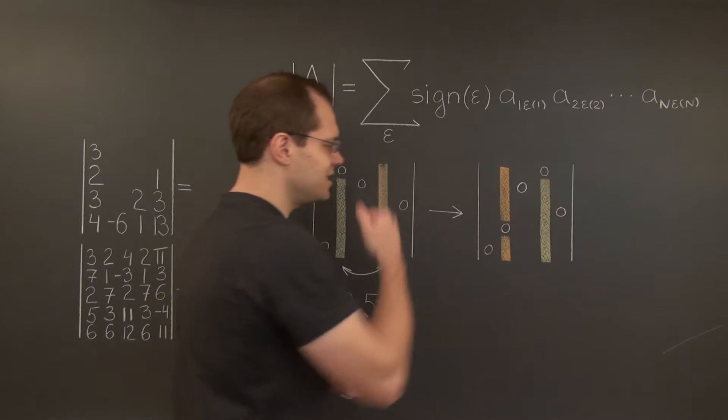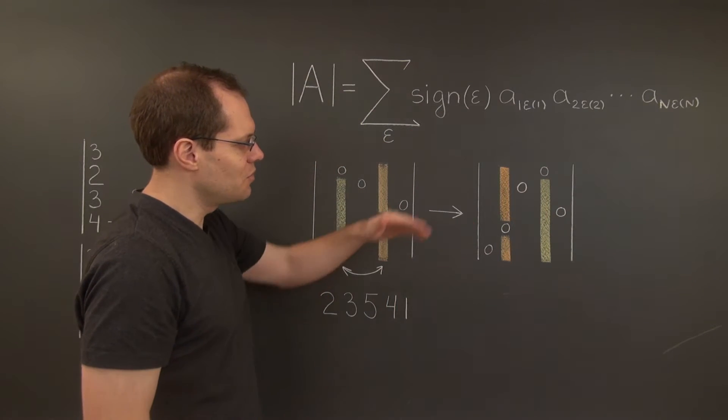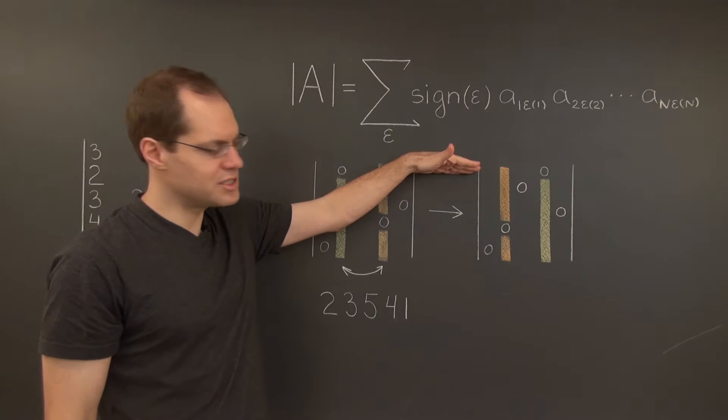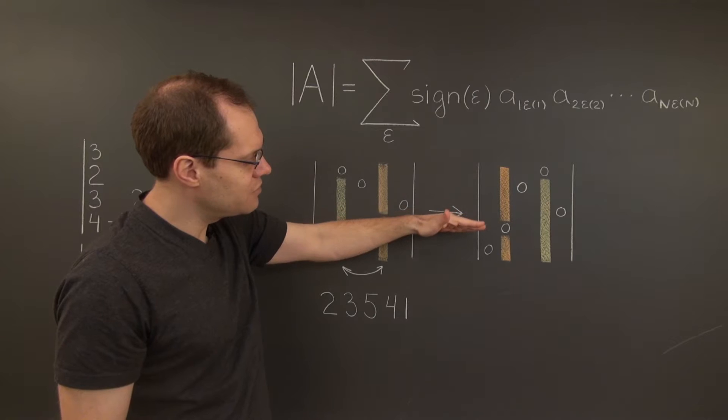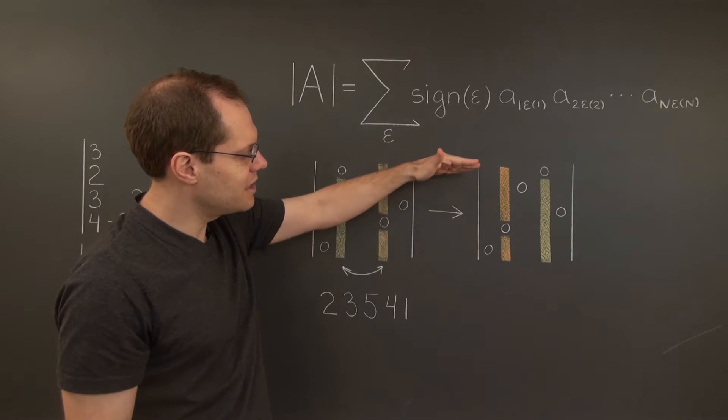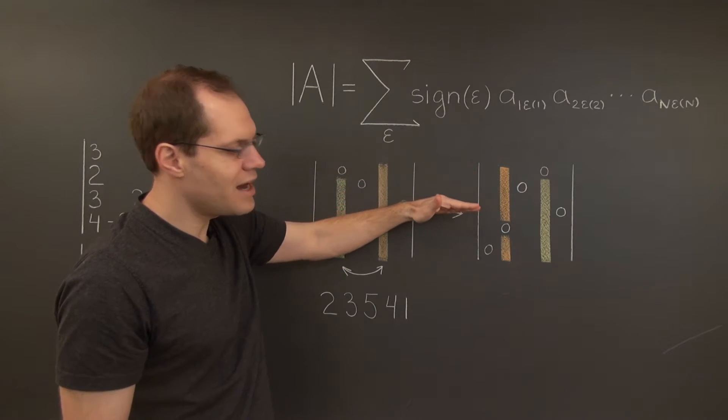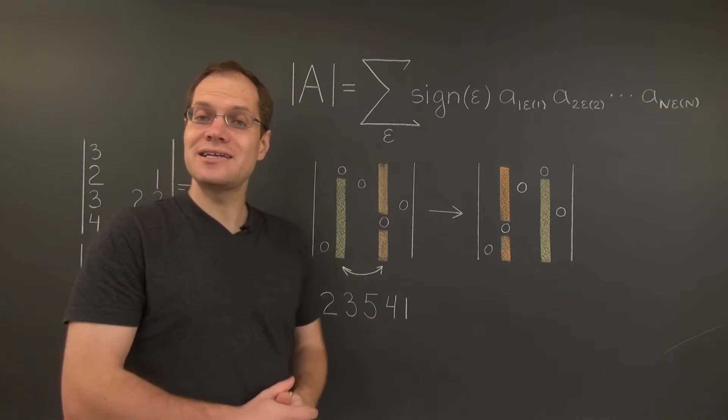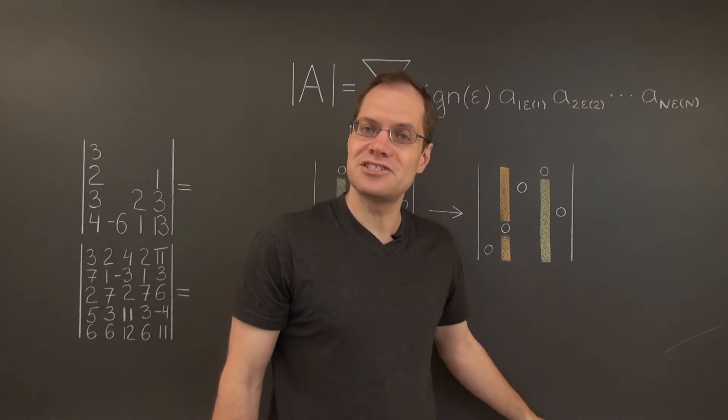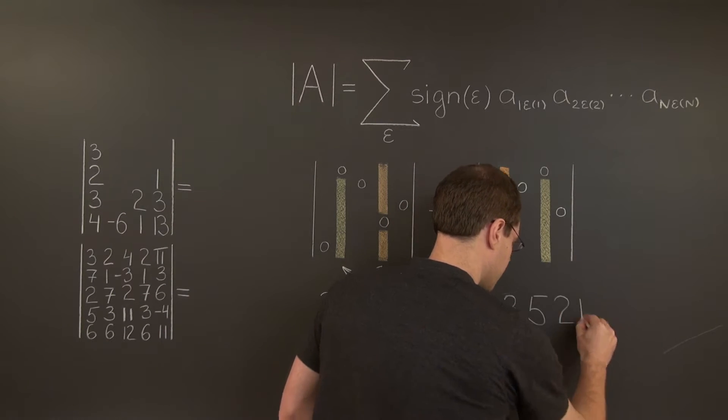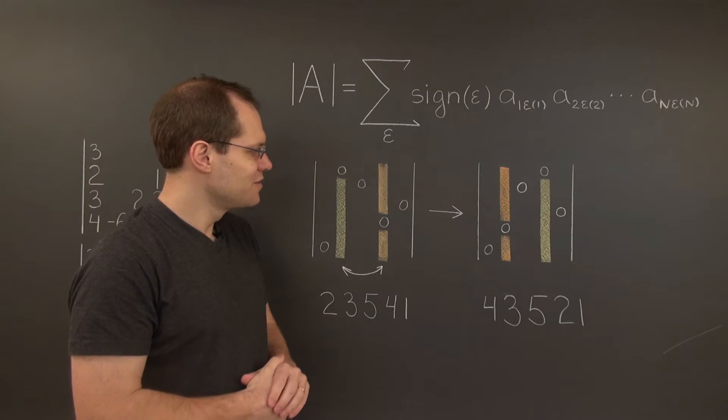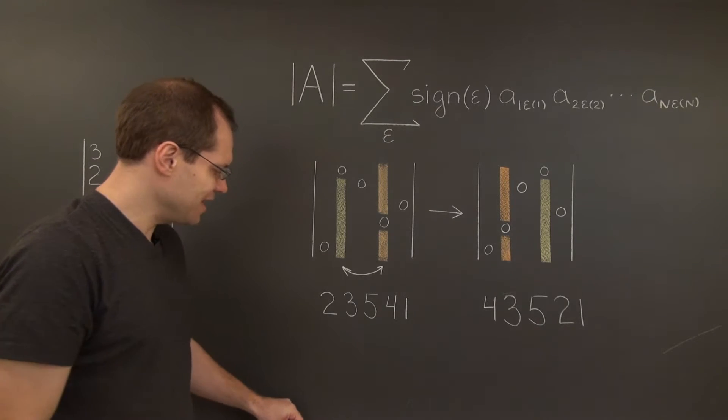What's the corresponding permutation in the other matrix? Well let's see, let's once again march down rows and name the columns. 4, 3, 5, 2, 1. Let me write it down, and then we'll look at the permutations side by side. 4, 3, 5, 2, 1.